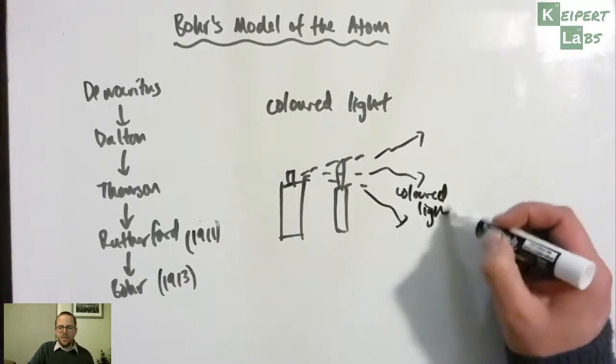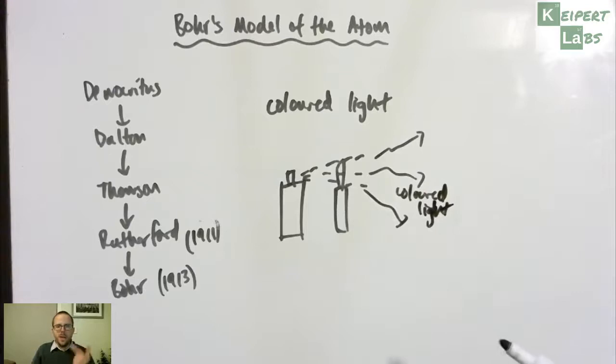And then what you identified, there were two things: that A, it was coloured, and B, that those colours were different for different elements, but they're consistent for that particular element.